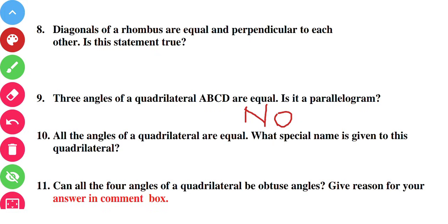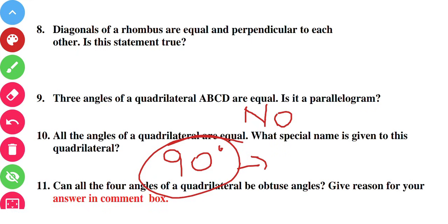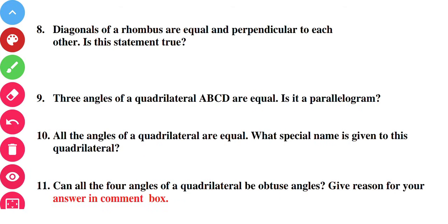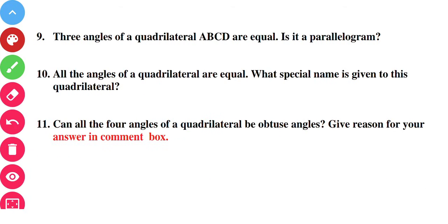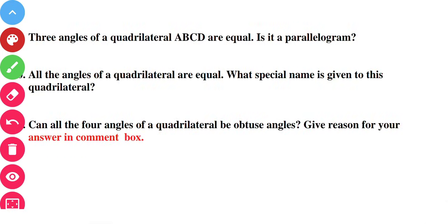Question number ten: all the angles of a quadrilateral are equal. What special name is given to this quadrilateral? Each angle would be 90 degrees, so the quadrilateral can be a square or a rectangle — both options are correct. Question eleven: can all four angles of a quadrilateral be obtuse? Please answer this in the comment box. Thank you and stay connected.